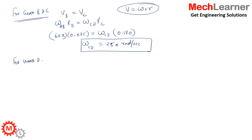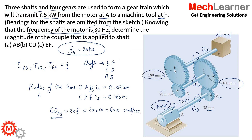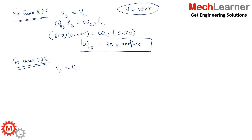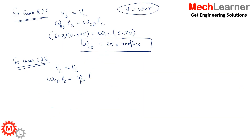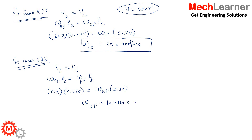For gears D and E: gear D and E are attached, so the velocity of gear D equals the velocity of gear E. Gear D is attached to shaft CD and gear E is attached to shaft EF, so: ω_CD × r_D = ω_EF × r_E. Substituting: 25π × 0.075 = ω_EF × 0.180. Solving gives ω_EF = 10.4167π radians per second.